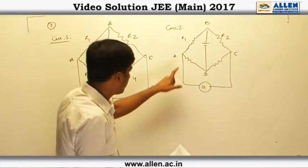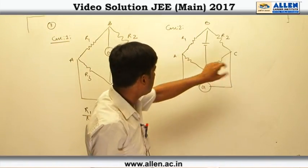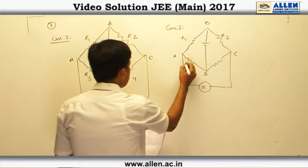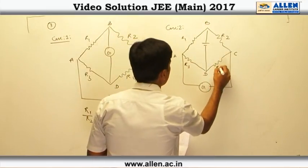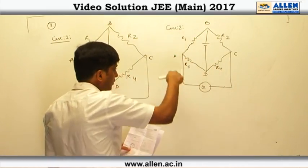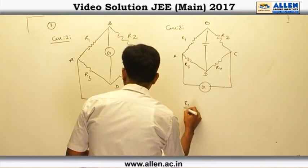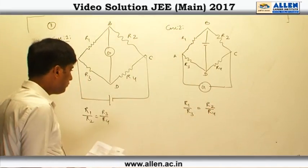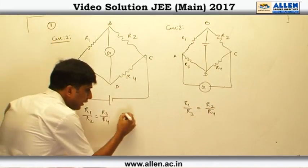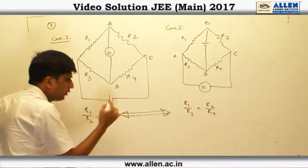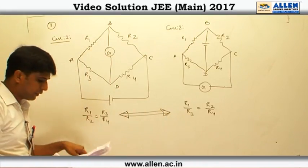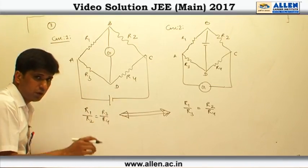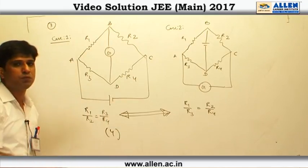Since the galvanometer is arranged between A and C and the battery is arranged between B and D, from this arrangement the condition of a balanced Wheatstone bridge will be given by R1 by R3 equal to R2 by R4. We can easily see that both equations are the same. Therefore, the fourth statement is false, and the correct option is option number 4.